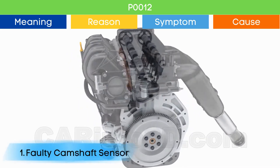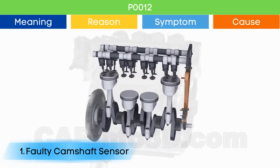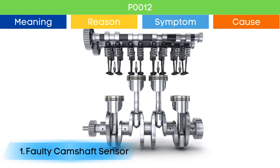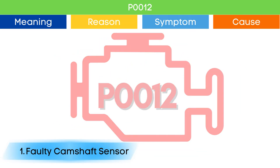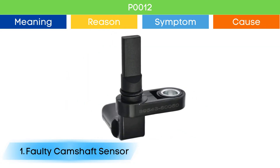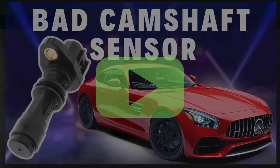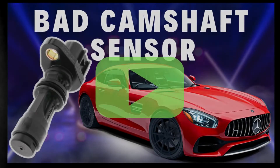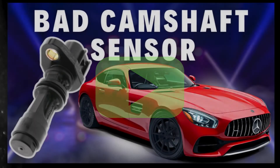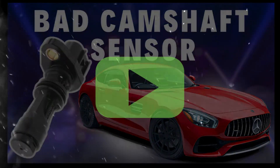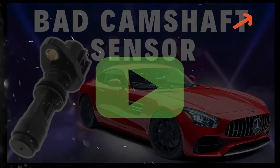Cause number one: bad camshaft position sensor. Due to malfunction of the camshaft position sensor, the ECU may detect an engine timing error, which may trigger P0012 and other OBD-II codes related to camshaft position sensors, along with symptoms of a bad camshaft position sensor. Check our detailed video to learn more — link in the corner.